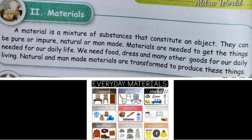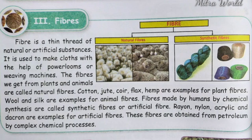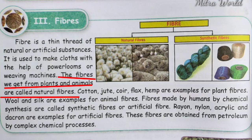Next we move on to fibers. A fiber is a thin thread of natural or artificial substances. It is used to make cloth with the help of power looms or weaving machines. Fibers are of two types: natural fibers and artificial fibers.